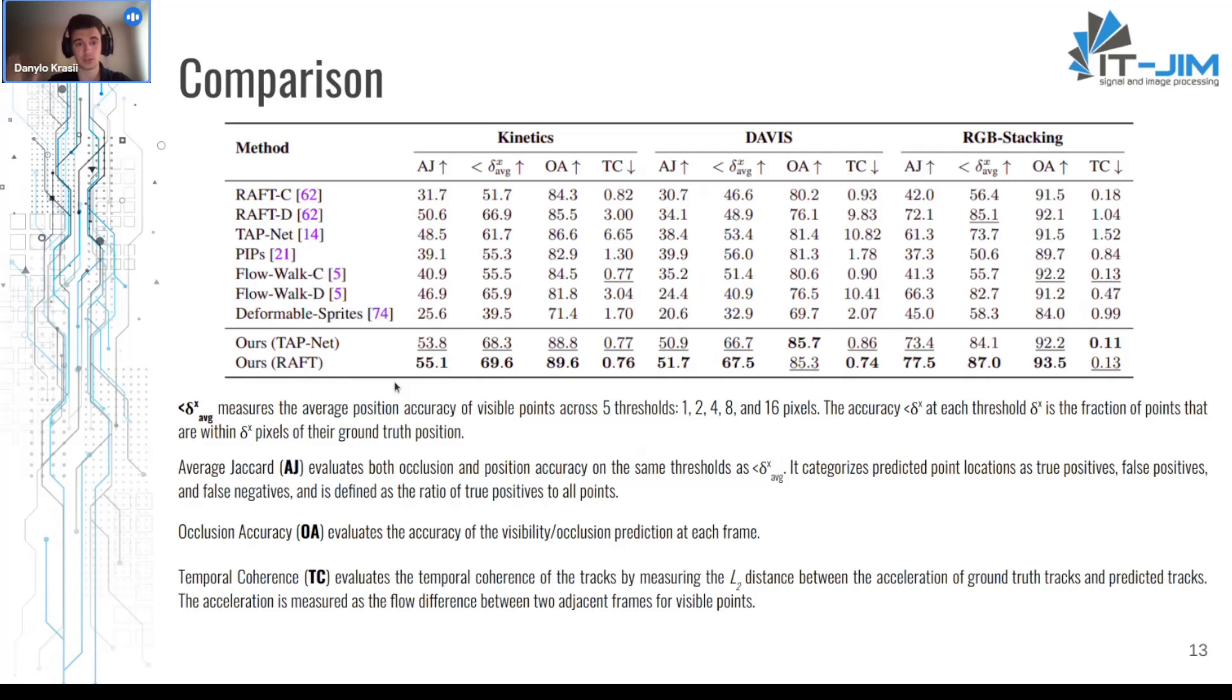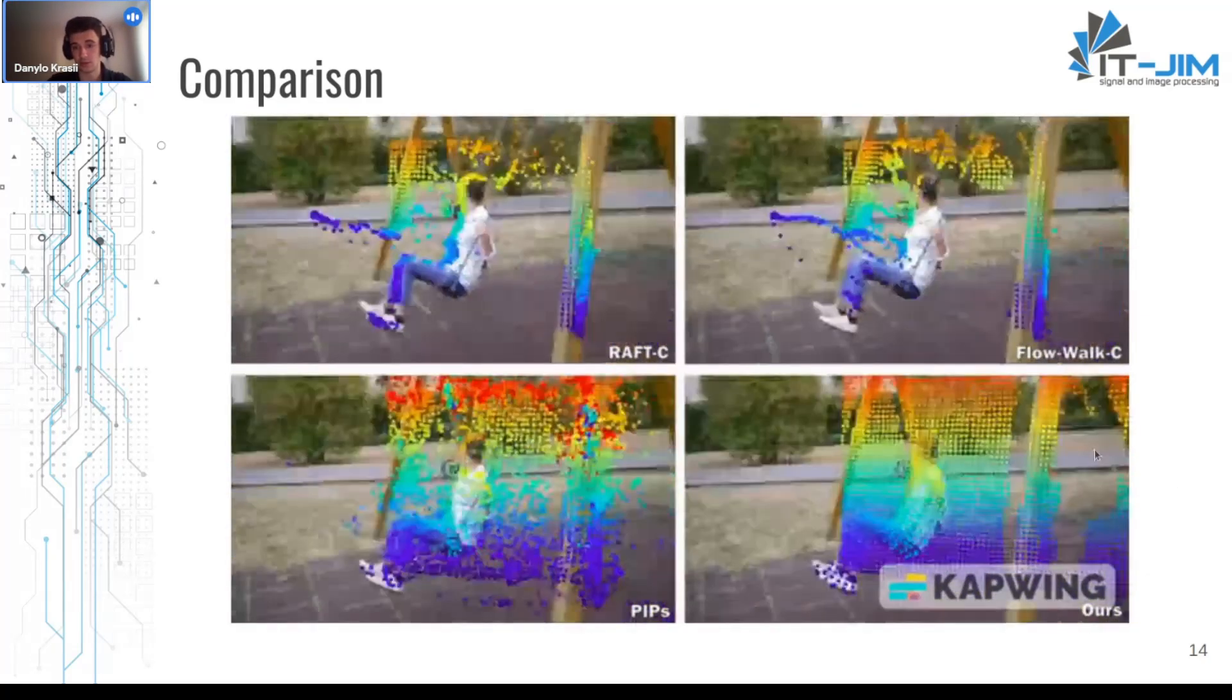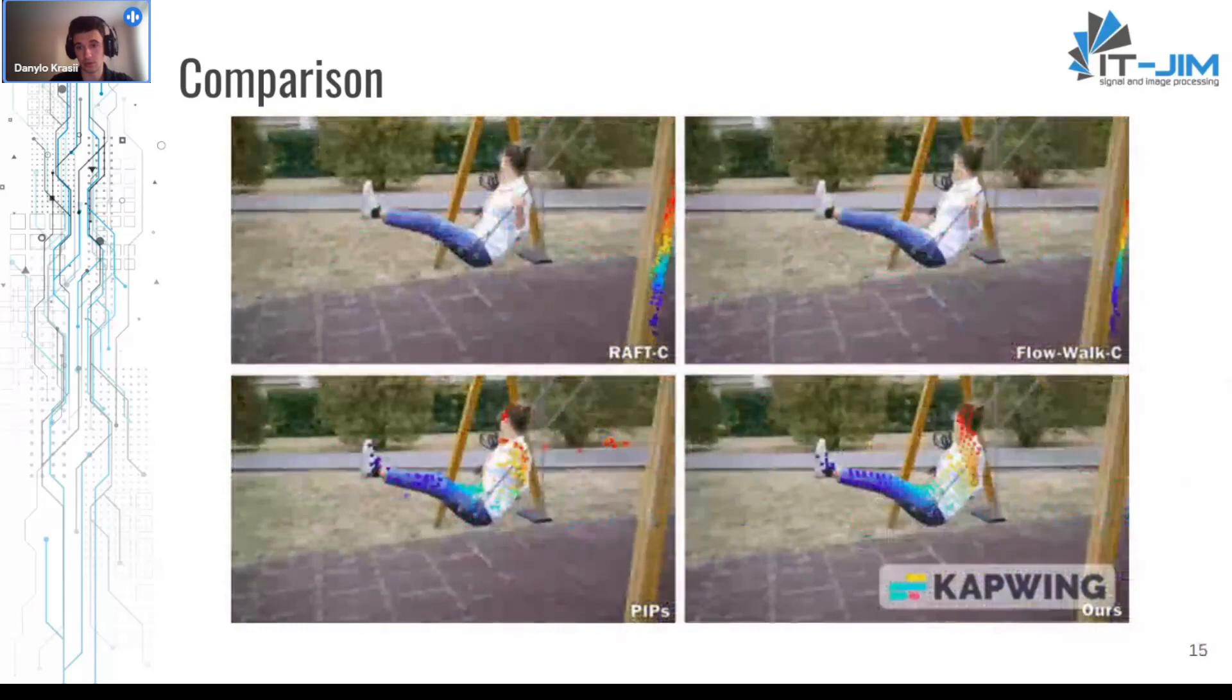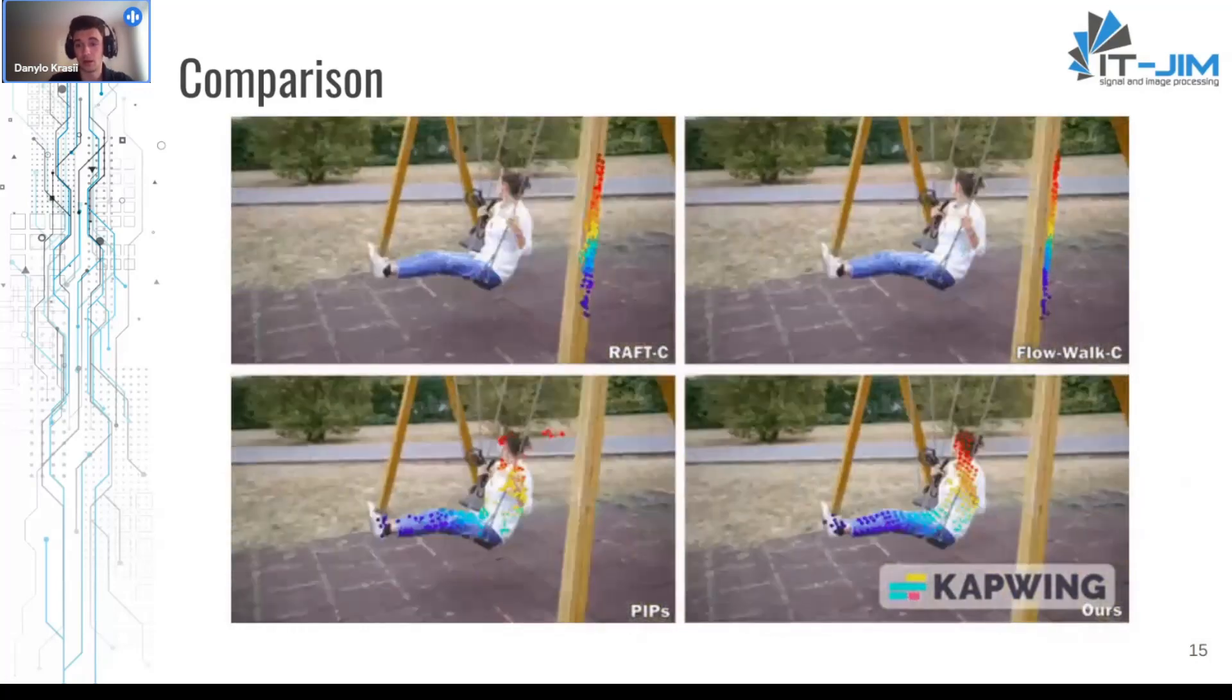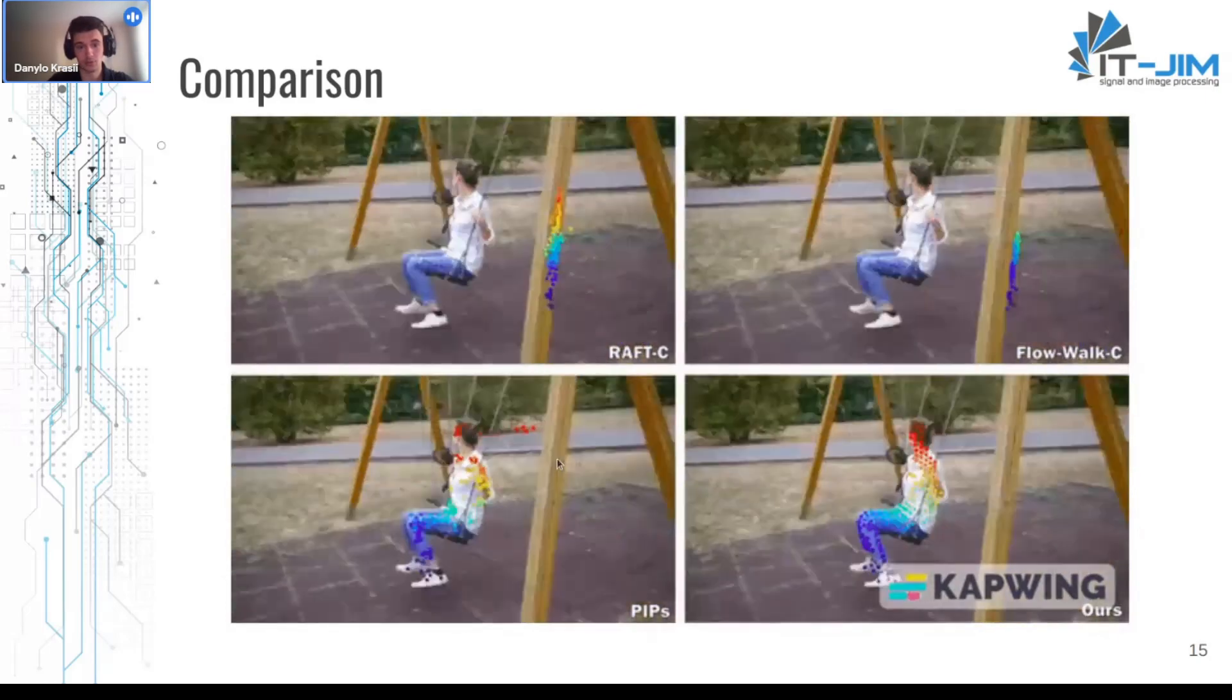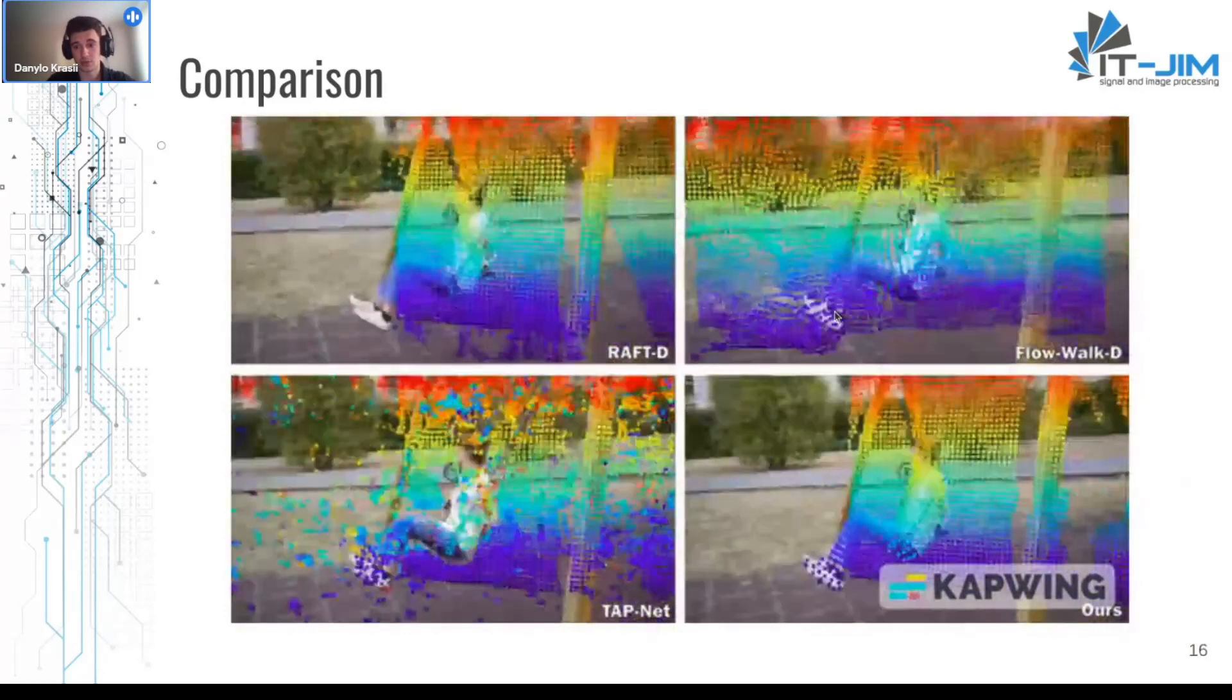So finally some visualization. Here we can see comparison of OmniMotion in the bottom right corner with other baselines: RAFT-c, FlowWalk-c and PIPS. Here we can focus on the points and we can see that OmniMotion handles occlusions pretty good. PIPS is trying but it failed a lot of points while RAFT-c and FlowWalk-c, yeah they just gave up.